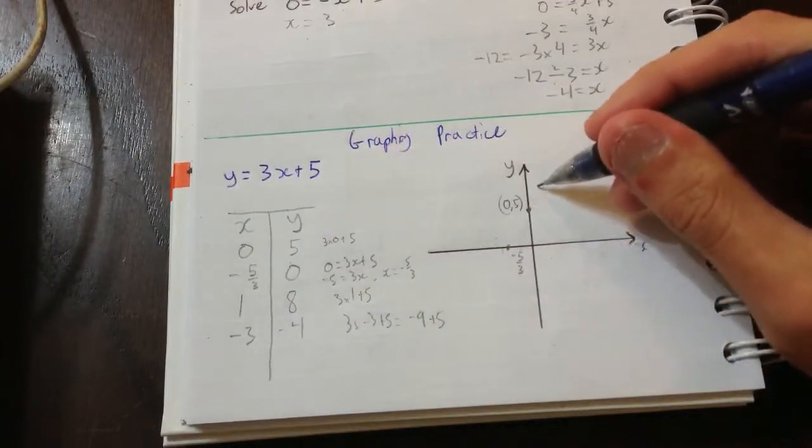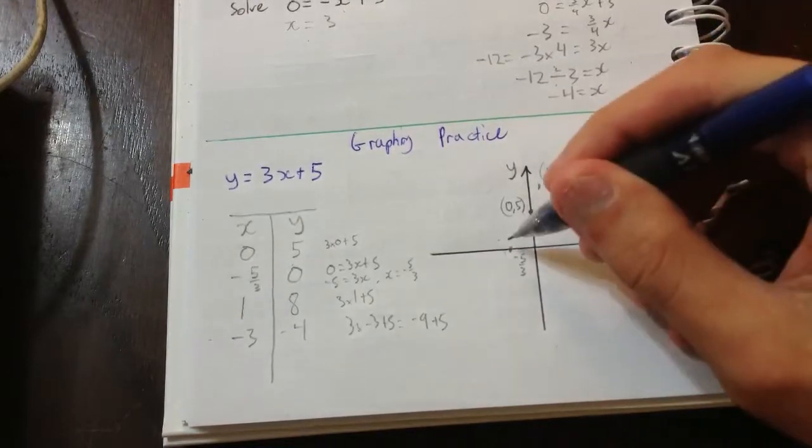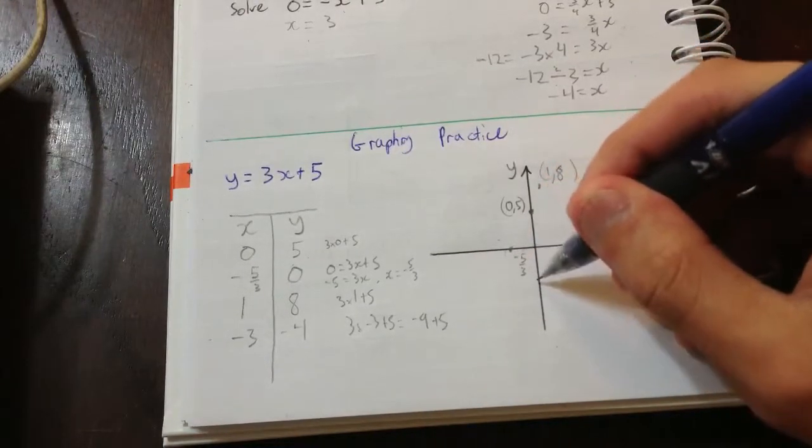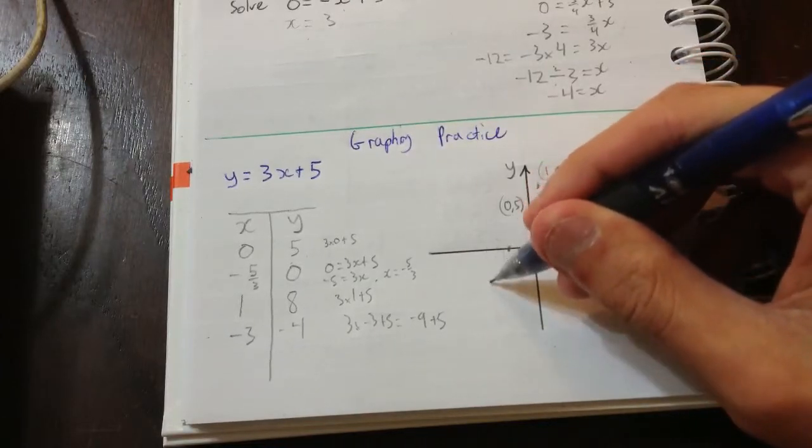So we can put that in 1, 8. I'm guessing that'd be here. 1, 8 or minus 3 minus 4. So minus 4 would be around here. And if this is 2, minus 3 would be around here minus 4.